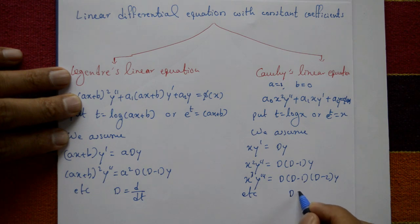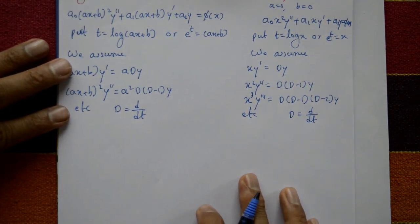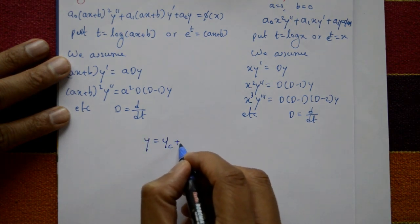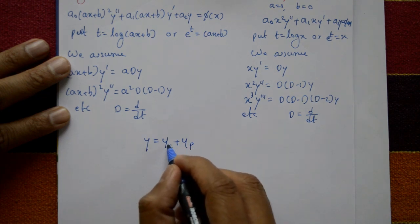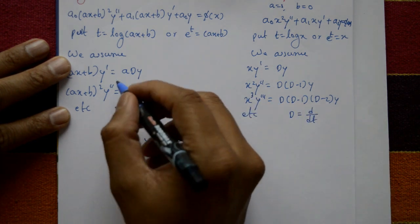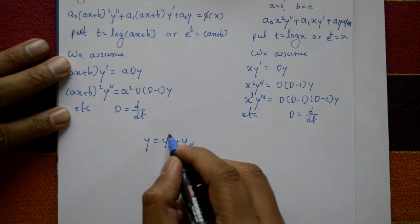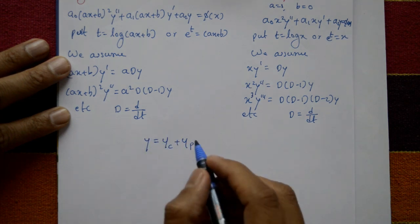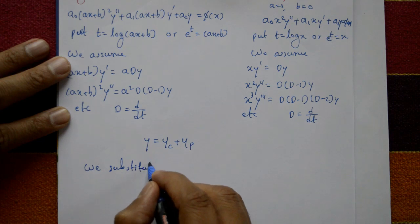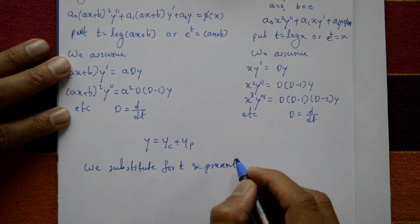To find the complete solution, whether for Legendre's or Cauchy's equation, the general complete solution is y equals yc plus yp, where yc is the complementary function and yp is the particular integral. After substitution using the assumed results, find the complementary function and particular integral, then add them to get the general solution. Finally, substitute back for t and present the solution in terms of x.